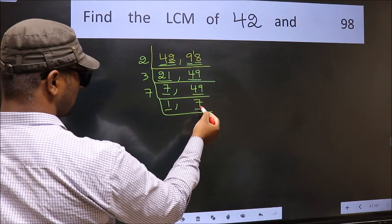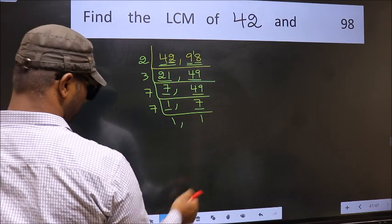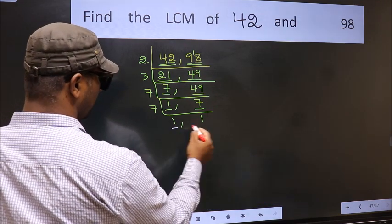Now we got 1 here. So focus on the next number 7. 7 is a prime number, so 7 times 1 is 7. So we got 1 in both the places.